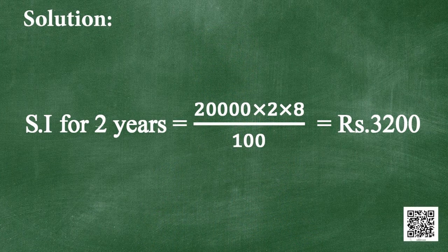The total compound interest: rupees 1,600 for the first year and rupees 1,728 for the second year gives a total of rupees 3,328. Comparing with simple interest for 2 years: 20,000 multiplied by 2 multiplied by 8 divided by 100 = rupees 3,200. The compound interest is rupees 128 more than the simple interest. If Arun had used compound interest, he would pay rupees 128 more.